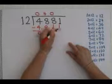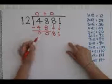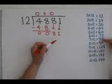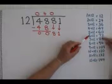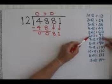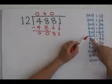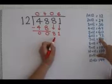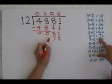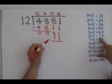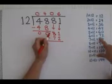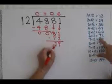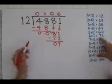We will then bring down the next digit which is a 1. And we say to ourselves how many times does 12 fit into 81? 12 will fit into 81 six times exactly with a remainder. 6 times 12 is 72. We will write the 6 up here on our answers and we write 72 down here and do another subtraction sum. We take 72 away from 81 which gives us a remainder of 9.